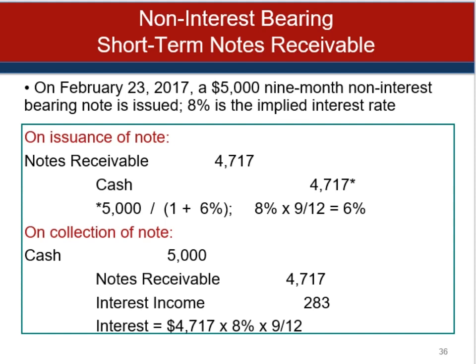For a non-interest-bearing note: a $5,000 nine-month non-interest-bearing note is issued with an implied interest rate of 8%. The note receivable would be recorded at $4,717, and we would give up cash of $4,717. In nine months we receive $5,000, the note receivable is written off, and interest income is recorded as the difference. That's $4,717 times 8% times 9 months out of 12, which equals $283.